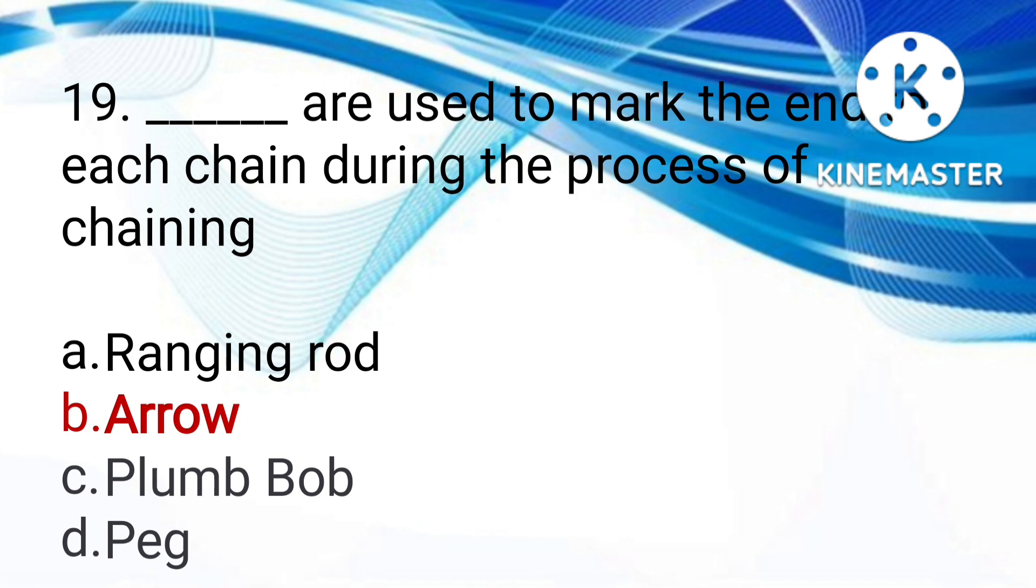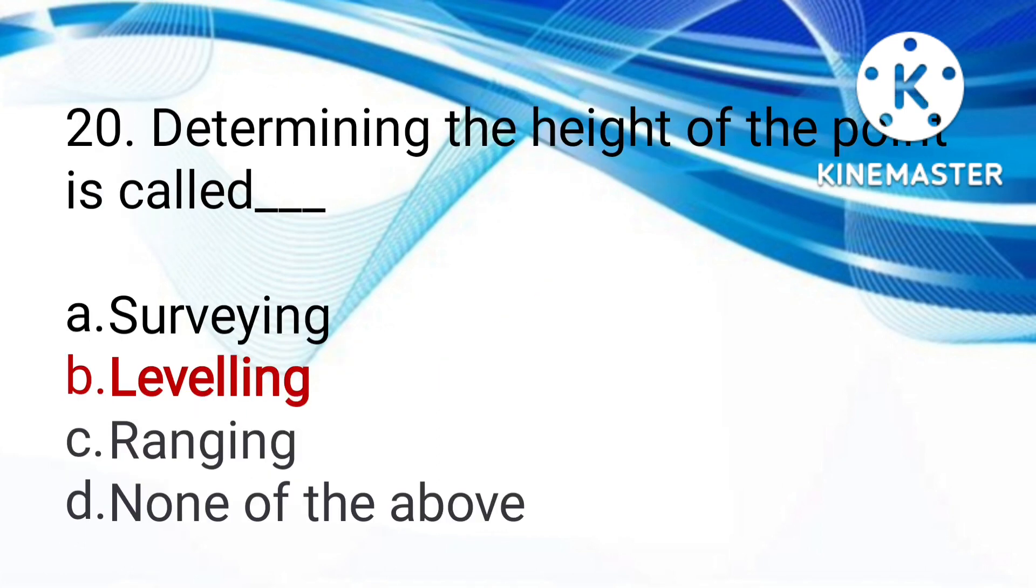What is used to mark the end of each chain during the process of chaining? Ranging rods, arrows, or plumb bobs. The answer is arrows. Determining the height of a point is called surveying, leveling, ranging, or none. The answer is leveling.